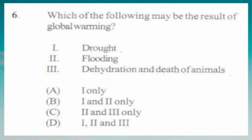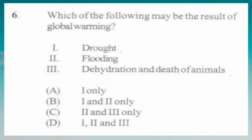Question number 6. Which of the following may be the result of global warming? 1. Drought, 2. Flooding, 3. Dehydration and death of animals. A. 1 only, B. 1 and 2 only, C. 2 and 3 only, D. 1, 2 and 3. The answer is D, 1, 2 and 3. When there is global warming, the overall atmospheric temperature will increase, causing more moisture to enter the atmosphere by transpiration and evaporation. Then when rain starts to fall, there will be a lot due to the increased rate of evaporation and transpiration.